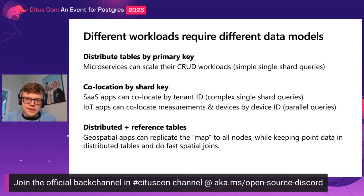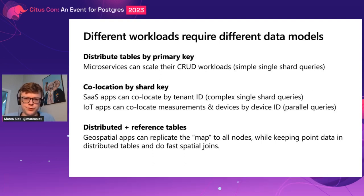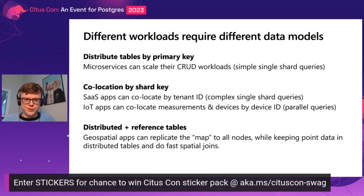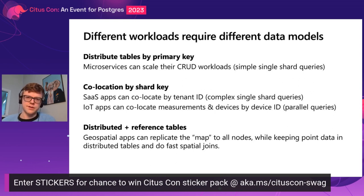This also implies a new problem: the distributed data modeling problem. You have to find a way to map your workloads into these distributed data modeling primitives. A common technique is to distribute tables by primary key, essentially doing what NoSQL databases do. That's quite good for microservices that just use a single table, maybe with a JSON column, and can scale well for high throughput CRUD workloads. But if you have a more complex application — a software as a service app with a to-do list, contacts, emails, labels, filters — you have a lot of tables, but typically the application is always doing a query in the context of a single tenant. So you can distribute and co-locate those tables by tenant ID and get nice scalability characteristics.